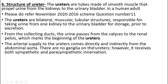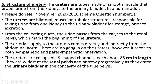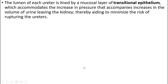The arterial supply to the ureters comes directly and indirectly from the abdominal aorta. There are no ganglia in the ureters; however, they receive both sympathetic and parasympathetic innervation. Ureters are collapsible, S-shaped channels each about 25 cm in length, widest at the renal pelvis and narrowing progressively as they enter the urinary bladder in the concavity of the true pelvis.